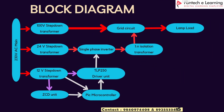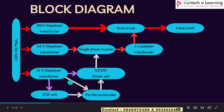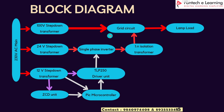This is the block diagram for Dynamic Voltage Restorer. Here we are using a single phase inverter and PIC microcontroller, TLP250 driver unit, ZCD unit, 1-to-N isolation transformer, and grid circuit. For the grid circuit we are giving a 100V step-down transformer. For the single phase inverter we are giving 24V AC as input. For the TLP250 driver board, PIC microcontroller, and ZCD unit we are giving 12V step-down AC as input, and we can see the output visually by using a lamp load.